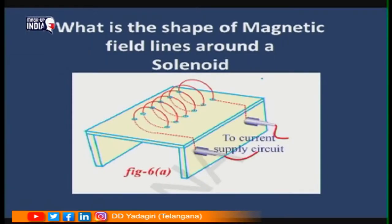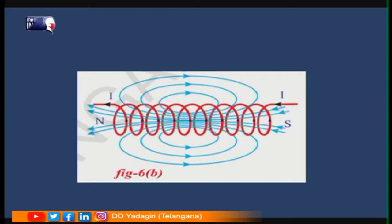If the same coil is made into a solenoid — that is, in the form of a helical shape — then at each and every coil the magnetic field will be perpendicular and directed through the solenoid. The magnetic field inside the solenoid will be parallel and strong. Outside the solenoid, the magnetic field will be similar to that of a bar magnet.